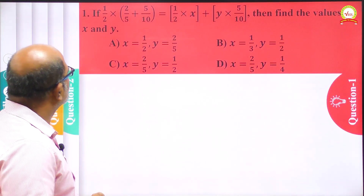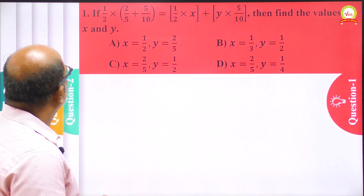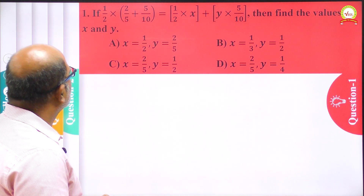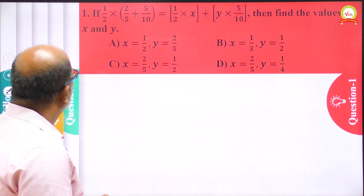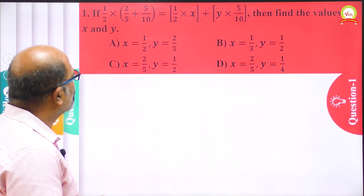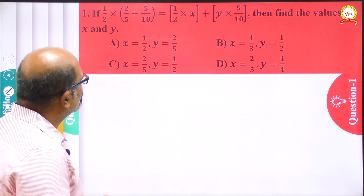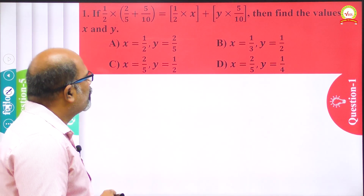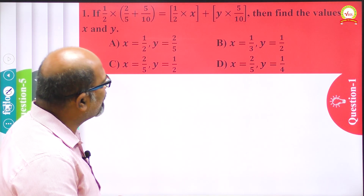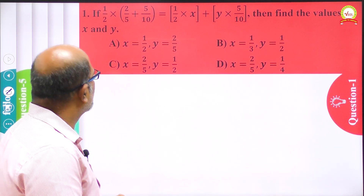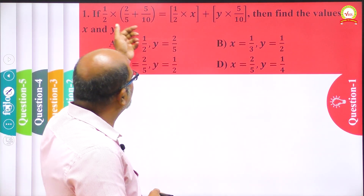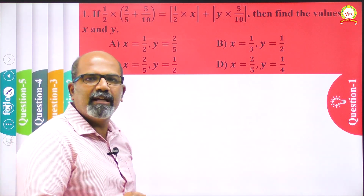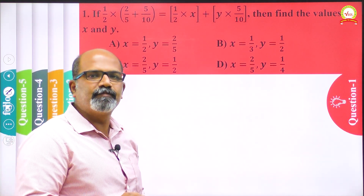This is the first question. If 1/2 multiplied by (2/5 + 5/10) equals 1/2 into x plus y into 5/10, an equation is given like this, then find the values of x and y.